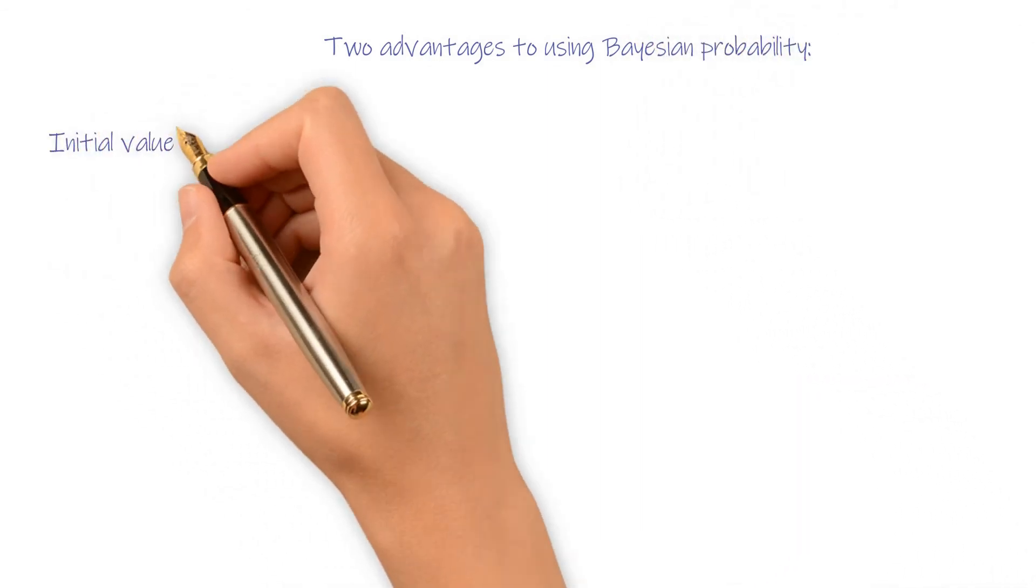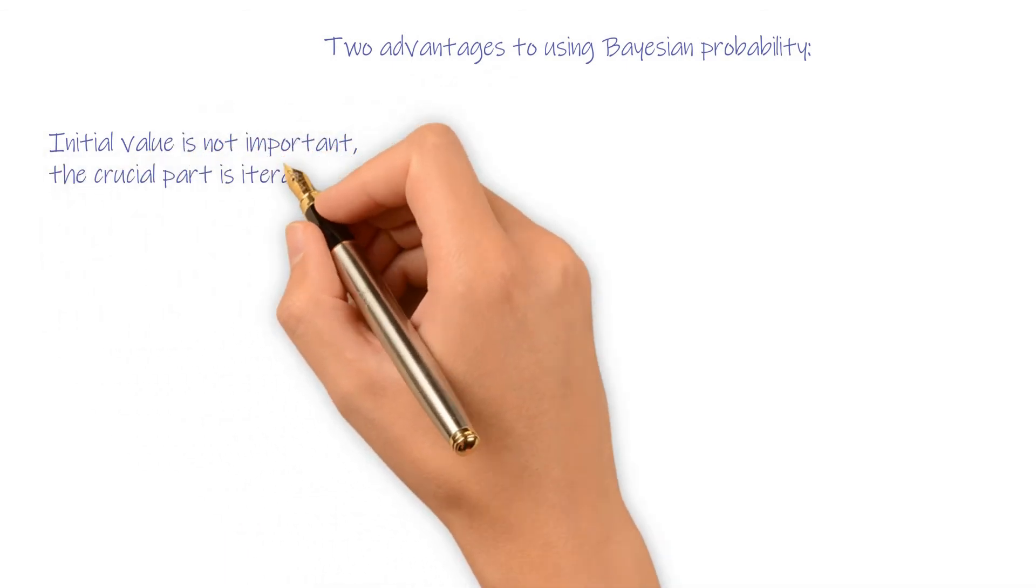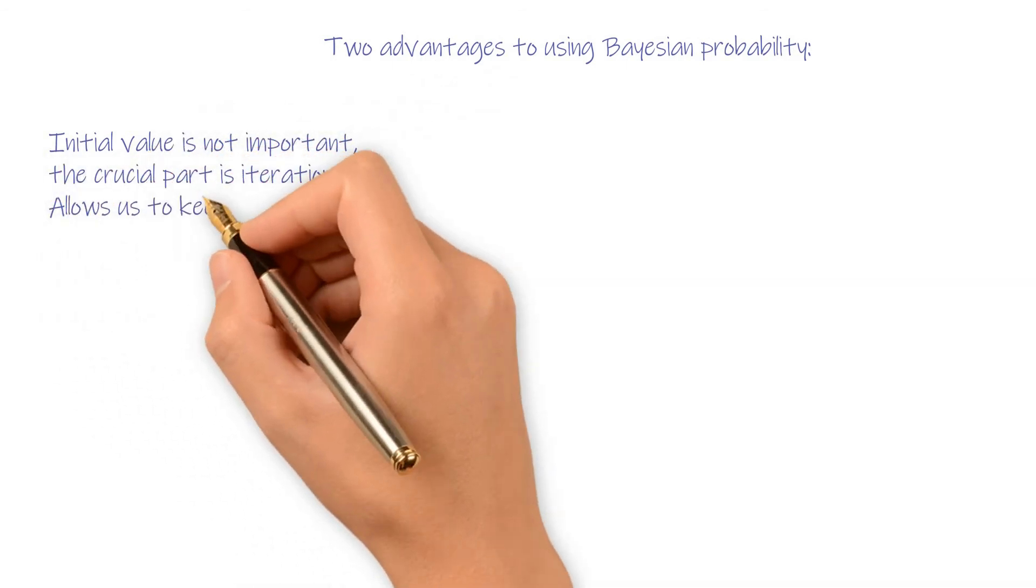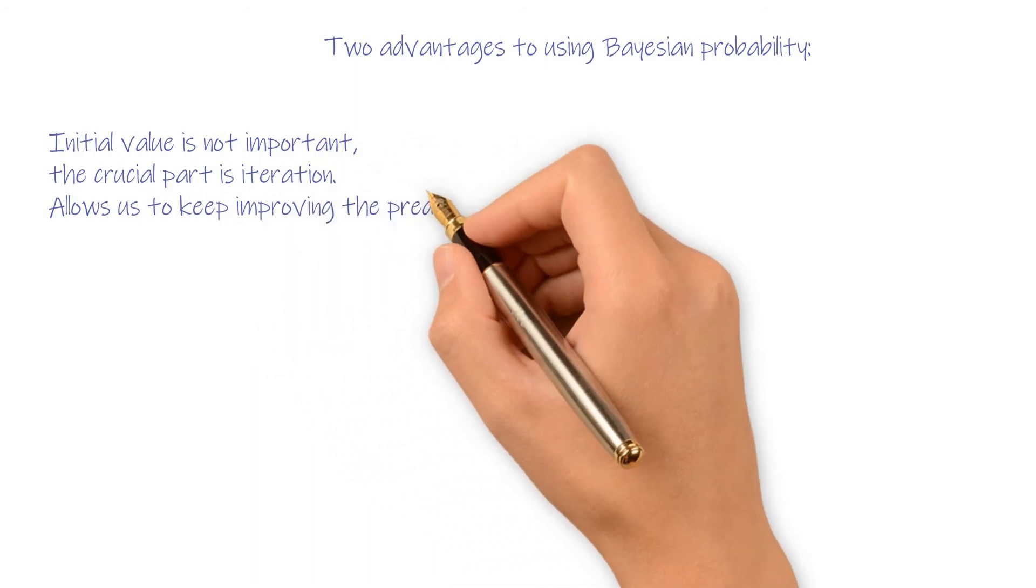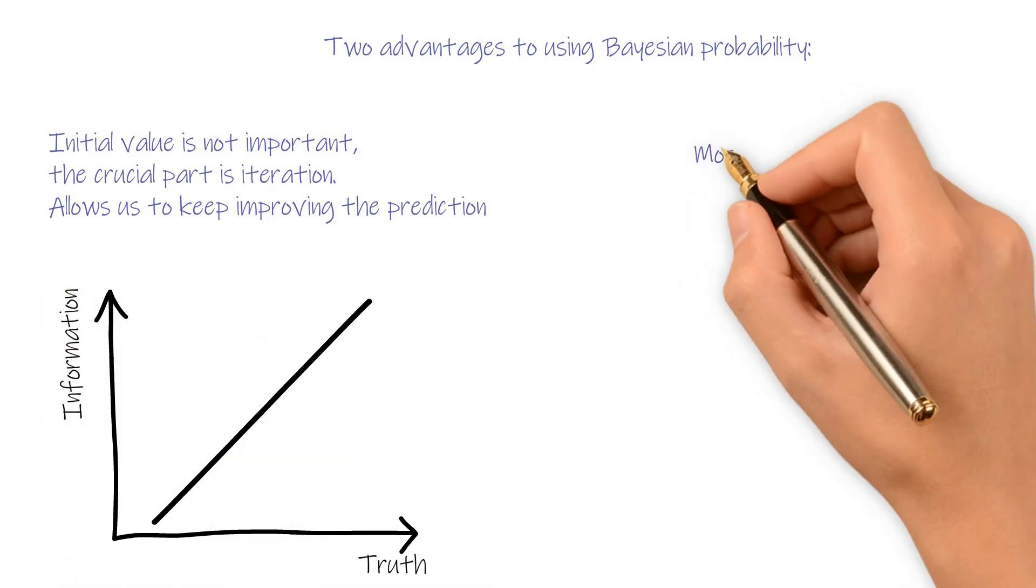The initial value is not important. The crucial part is iteration, so we can keep improving our prediction. For whether there is a bird on the tree example, first guess is not that important, since Bayesian probability is not a one-time deduction. Every time I get a piece of new information, I will update my belief. As more information collected, the probability will tend to close to the truth.